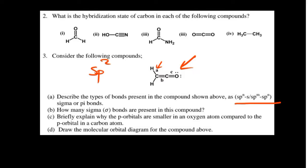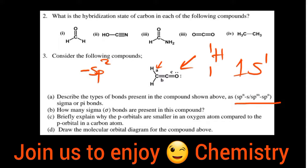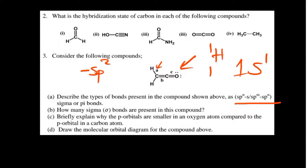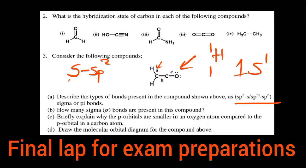Hydrogen has an electron configuration of 1s1, meaning its outer shell orbital is an s orbital. Therefore, the bond formation for 'a' involves overlap between the sp2 hybridized orbital of the carbon atom and the s orbital of the hydrogen atom. That is how you answer for bond 'a'.